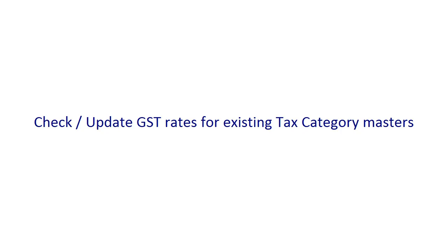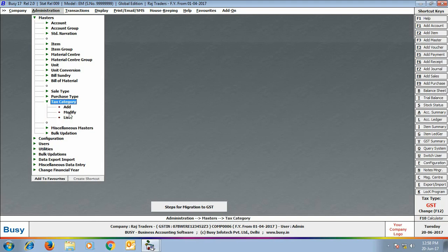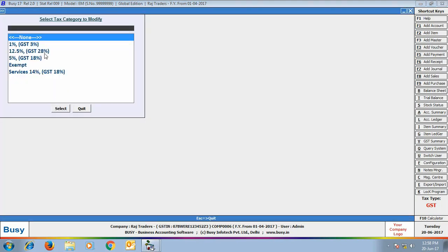Our next step is to check and update GST rates for existing tax category masters. In Step 1, if you clicked 'Yes' in the message box, the tax category masters are updated automatically. You can check these tax categories and update them as per your requirement. In the list, the names of tax category masters are changed — for example, the 12.5% tax category now has 'GST 28%' appended, and the 5% category has 'GST 18%' appended.